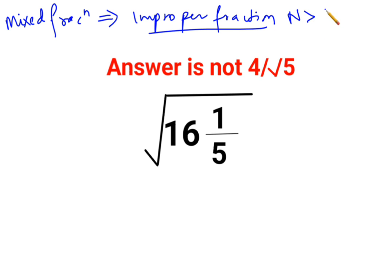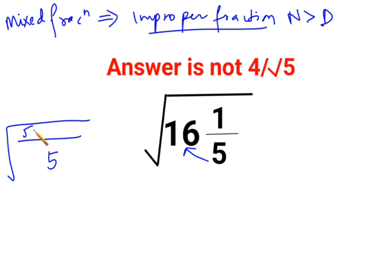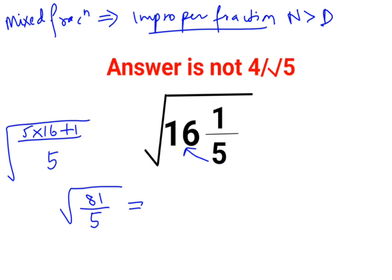An improper fraction is one where the numerator is greater than the denominator. Here, we keep the root as it is and keep the denominator as it is. The only change happens in the numerator: the denominator gets multiplied by the integer part. So 5 multiplied by 16, plus the numerator which is 1 — that gives 80 plus 1, which is 81 upon 5.